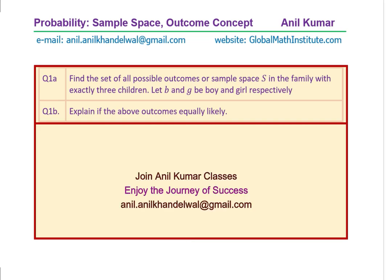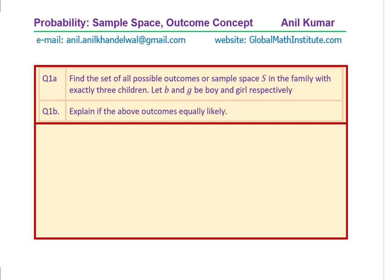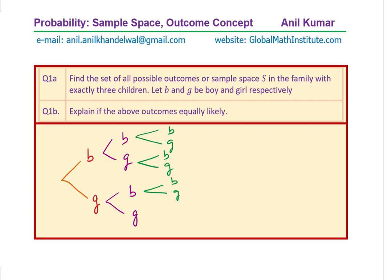Let's begin with part A. We want to find what outcomes form the sample space for exactly three children. We can make a tree diagram to make this simpler. Initially you could have a boy or a girl. The second child could again be a boy or a girl, and the third child could also be a boy or a girl — 50-50 chances, so these are equally likely events.